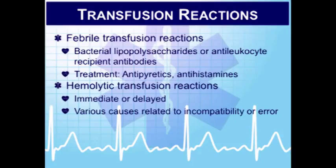Delayed hemolytic reactions occur in patients already sensitized from a previous transfusion, pregnancy, or transplant. They have an antibody floating in their system that wasn't detected. This reaction typically develops three to seven days after transfusion, so we won't see it if we've just given blood. These patients may be ones we're transferring between hospitals. Symptoms are generally mild: mild fever, chills, and jaundice, and patients tend to do alright.